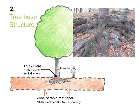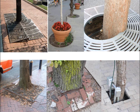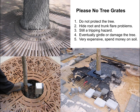We shouldn't put anything in the area of these structures that is going to conflict with their function. If you start looking around, you'll see that either the tree destroys the tree grate, or the tree grate destroys the tree, or both. As designers — especially if you're calling yourself a sustainable designer — get rid of anything close to the tree. The idea that we have to be able to walk right up to the face of the tree is a horrible, misguided, unsustainable idea. Tree grates don't protect the tree. They hide problems with the trunk flare. There's still a tripping hazard as they're lifted. They will eventually girdle or damage the tree. They're very expensive. Take that money and spend it on soil to make the tree grow better.